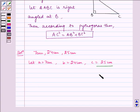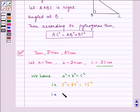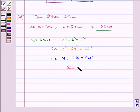So we have A square plus B square is equal to C square. That is 49 plus 576 is equal to 625, and we have 625 is equal to 625.